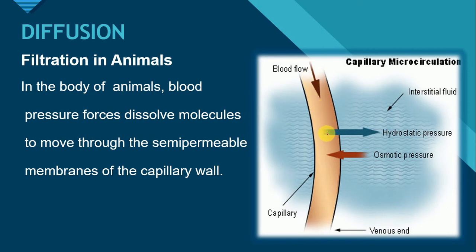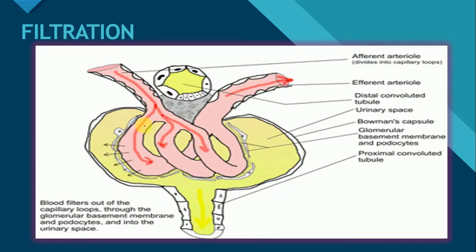When blood flows through these narrow blood vessels, due to blood pressure, the small dissolved molecules are filtered out through the semi-permeable membrane. While blood cells are large in size, they cannot be filtered out through the semi-permeable membrane.